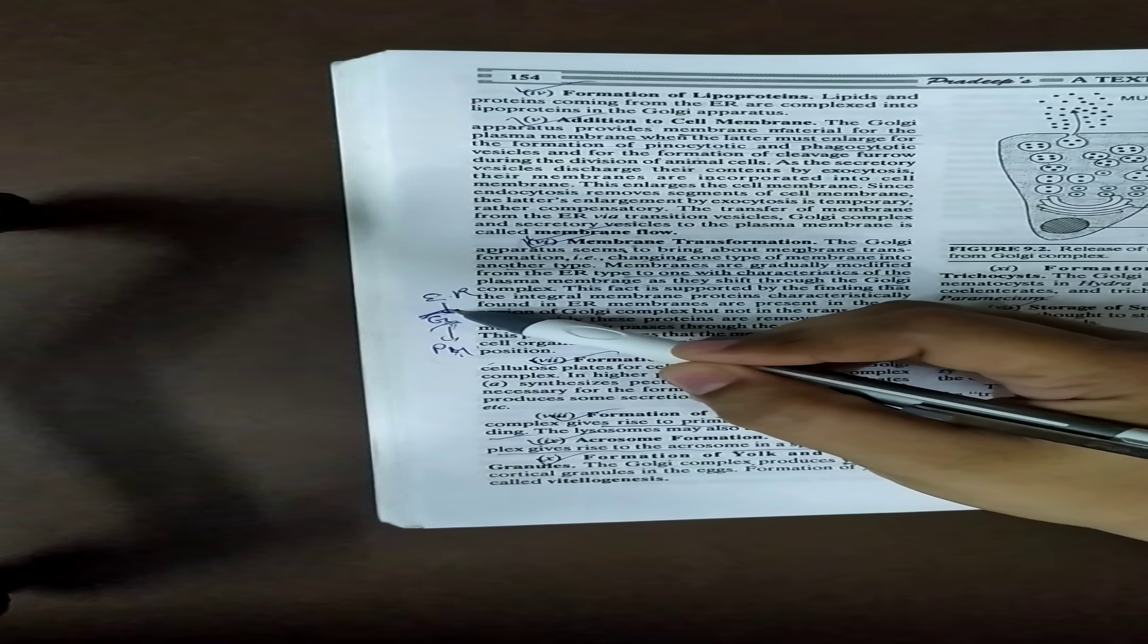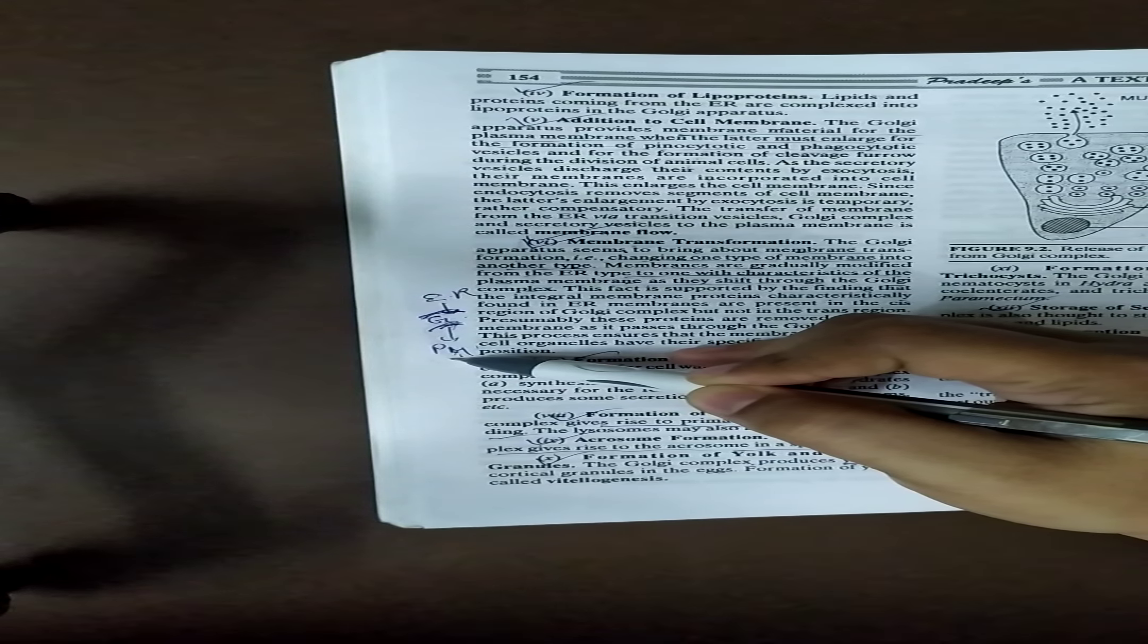But in case of the face Golgi body towards the plasma membrane of the cell, this is the membrane transformation. Within one structure or within one body, two kinds of plasma membrane or two types of plasma membrane are present. So this is the membrane transformation. This is a very peculiar character.